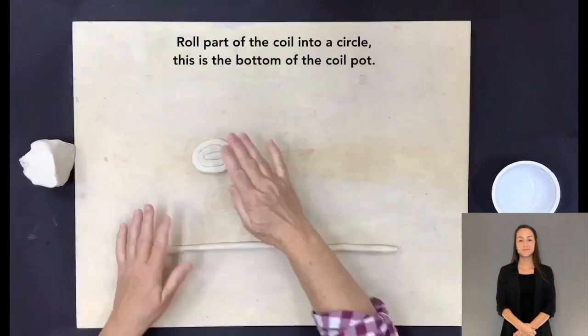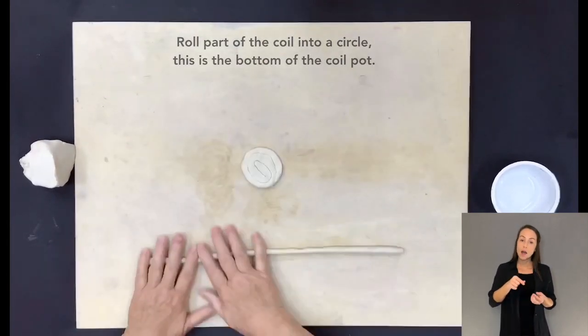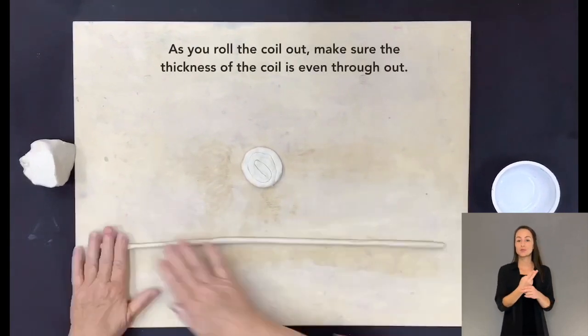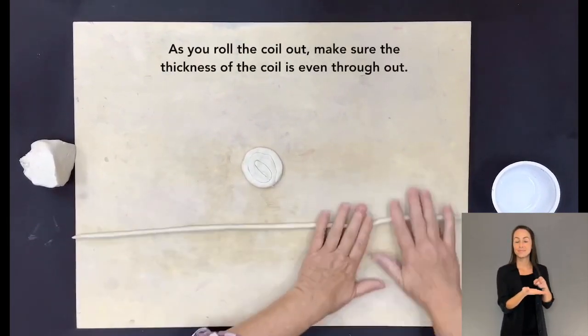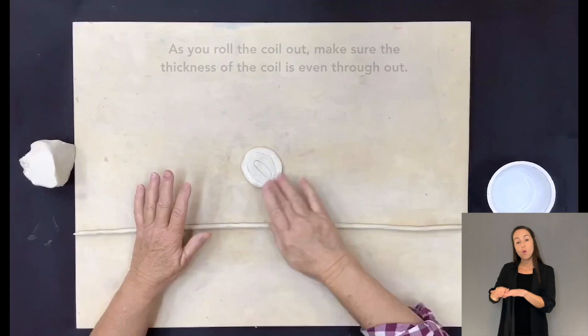Roll part of the coil into a circle. This is the bottom of the coil pot. As you roll the coil out, make sure the thickness of the coil is even throughout.